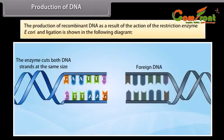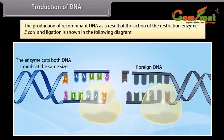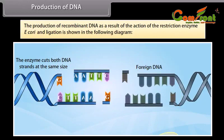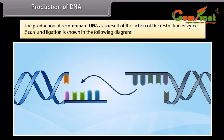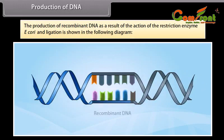The production of recombinant DNA as a result of the action of the restriction enzyme EcoRI and ligation is shown in the following diagram. The enzymes cut both DNA at the same site. After that, both DNA fragments can be joined at the sticky ends, resulting in a recombinant DNA.